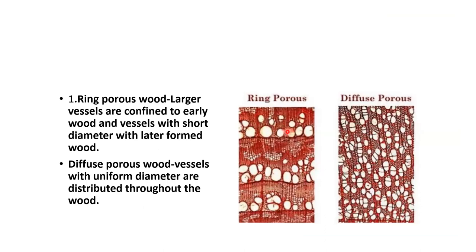Depending upon the distribution of vessels in the secondary xylem, wood is categorized into ring porous and diffuse porous. In ring porous wood, vessel diameter varies with season — in autumn vessels have a narrow diameter, while in spring larger vessels form indicating more water and mineral supply. In diffuse porous wood, plants grow in areas with uniform growth throughout the year, so vessel diameter is also uniform. Ring porous wood has larger vessels confined to early wood and smaller vessels forming later wood; diffuse porous wood has vessels of uniform diameter distributed throughout.